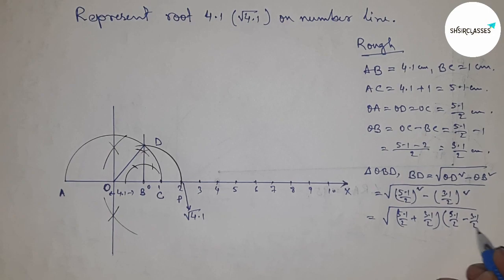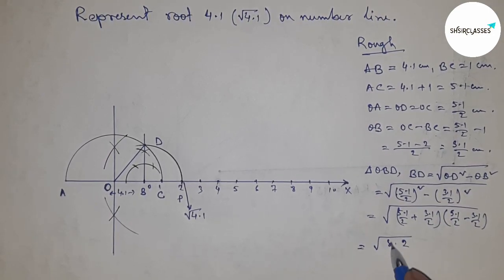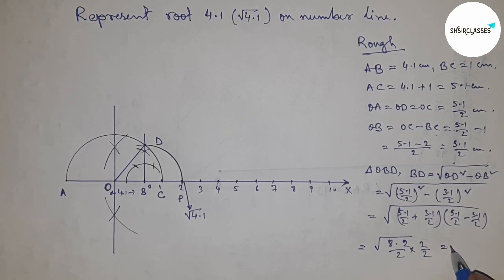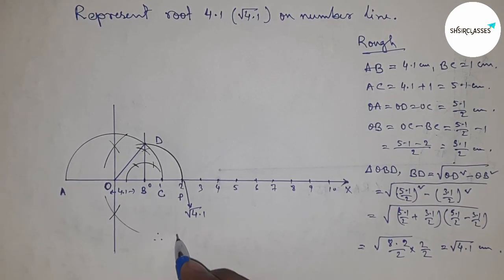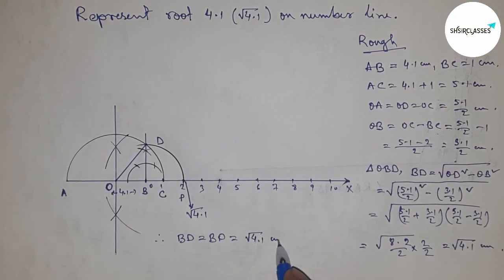This gives us √4.1. Therefore, BD = BP = √4.1 cm.